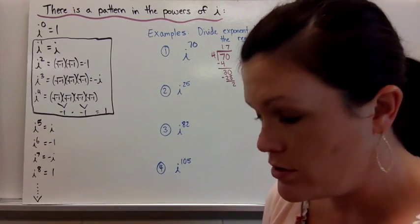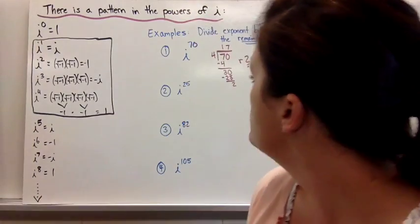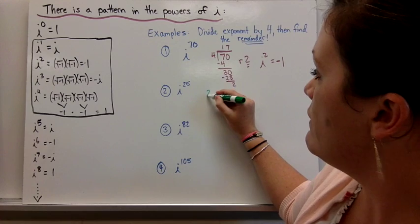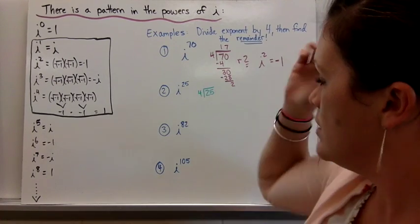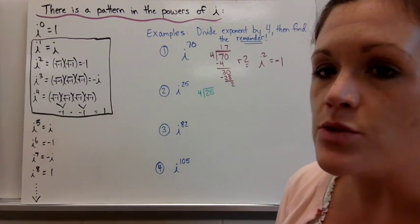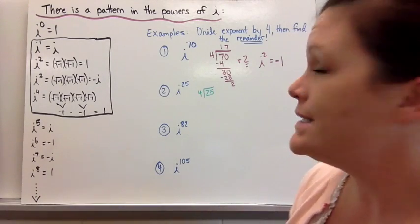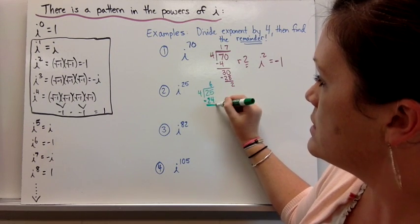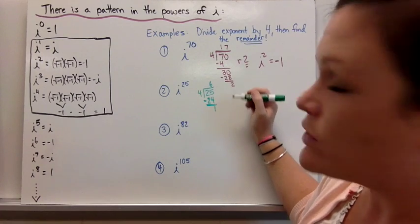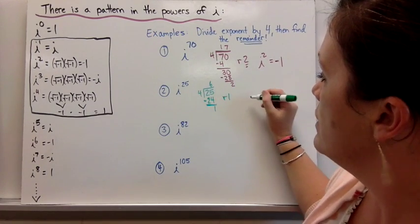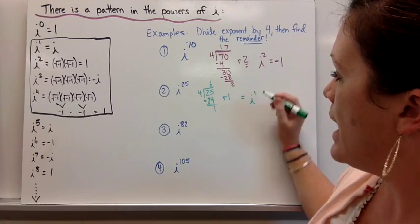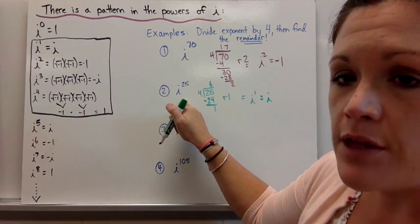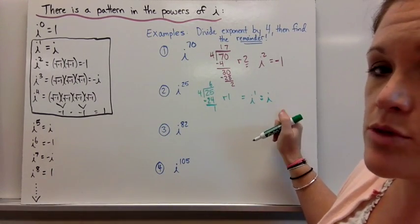Let's look at another one. i to the 25th power — take 25 and divide it by 4. 4 goes into 25 six times; 6 times 4 is 24; subtract and we have 1 left over. So our remainder is 1, and that is our new power of i. i to the first power is just i. So i to the 25th power simplifies to just i.